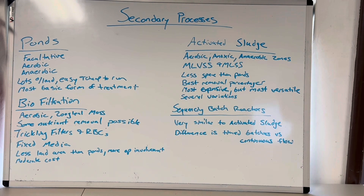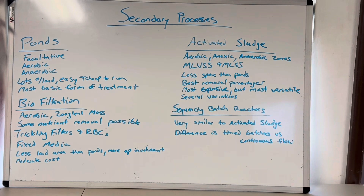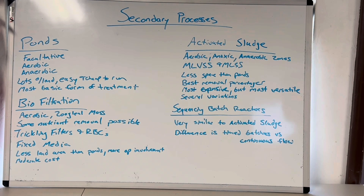Ponds are cheap to run, especially facultative ponds, because you rely on natural elements — wildlife, the sun, wind. You paid up front for your land, but you don't pay a lot of mechanical costs. I call it the most basic form of treatment because it's the one where you have the least ability to do enhanced biological nutrient removal. I just feel like it's the easiest to run.